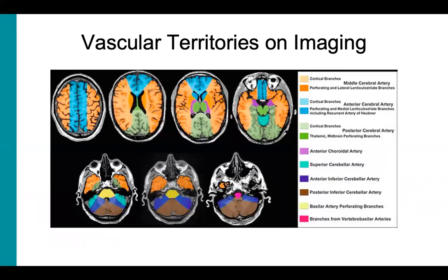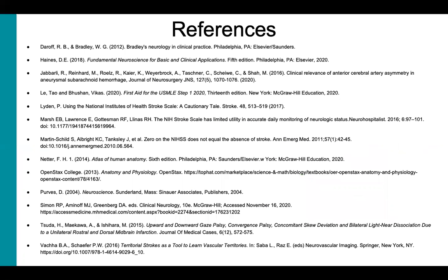This slide shows slices of a CT scan of the head with color representation of each major artery. In blue is the anterior cerebral artery, orange is the middle cerebral artery, and green is the posterior cerebral artery. And that's it for part one on blood supply and vascular territories. Here are my references for parts one through four. The next video will cover anterior circulation strokes.